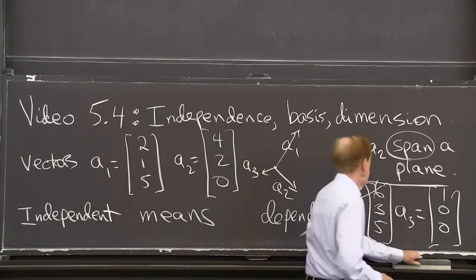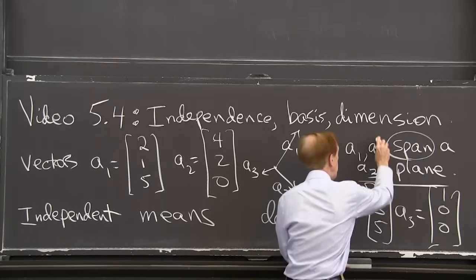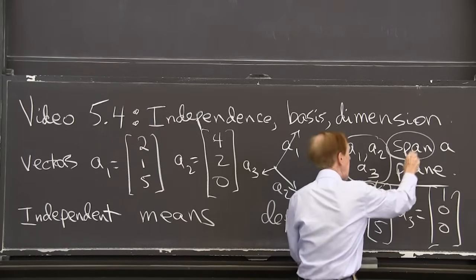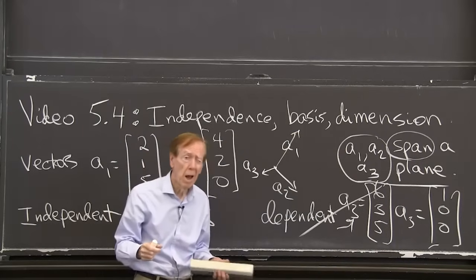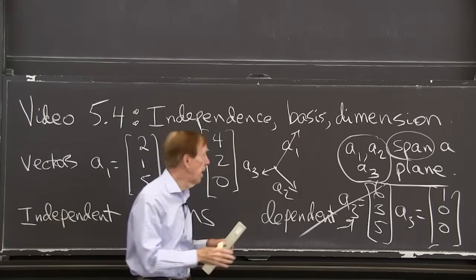So now a1, a2, and let me add in a3. All three of them span a. What do they span? What are all the combinations of a1, a2, a3?